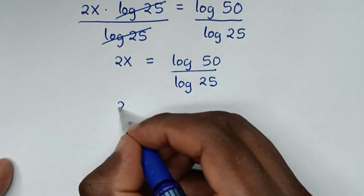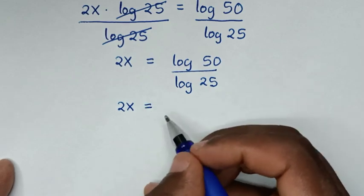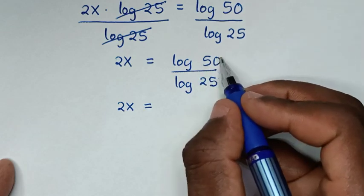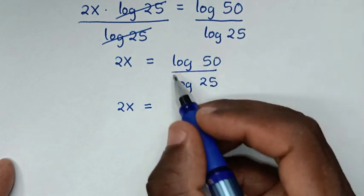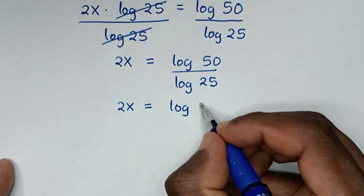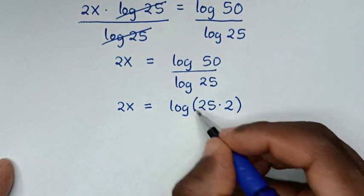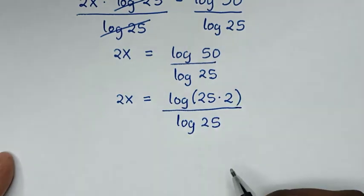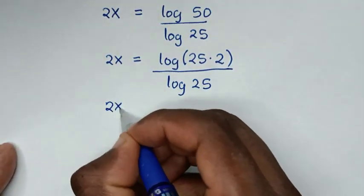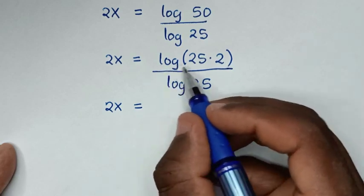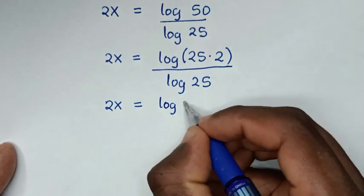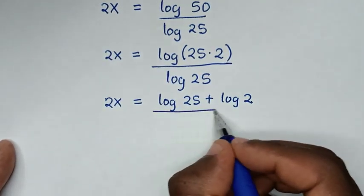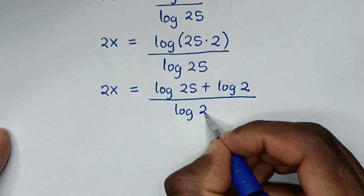Then in the next step, 2x is equal to — from here, in the denominator we have log of 25. This 50 is the same as 25 times 2. So it will be log of (25 times 2) over log of 25, which is the same as log of 25 plus log of 2, then divided by log of 25.